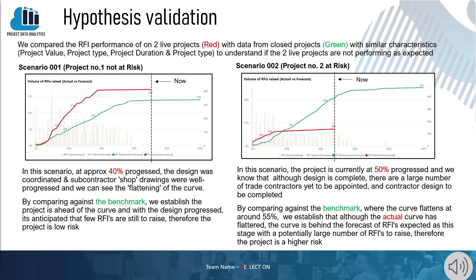We compared RFI performance on two live projects with data from closed projects with similar characteristics to understand if the live projects are performing as expected. In scenario one, approximately 40% of the project is progressed. The designs are coordinated, subcontractor shop drawings are well progressed, and we can see the flattening of the curve. By comparing against the benchmark, we established the project is ahead of the curve, and with design progressed, fewer RFIs are anticipated — therefore the project is low risk.